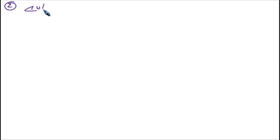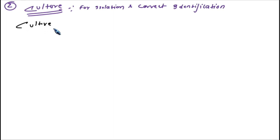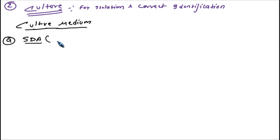We have now completed microscopy. The second major area in lab findings is culture. Culture is the gold standard and the most important — it is used for isolation and correct identification of fungi. For culture, we require culture media.